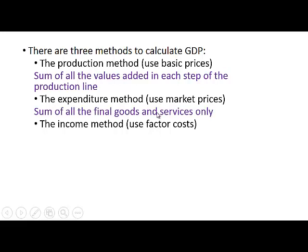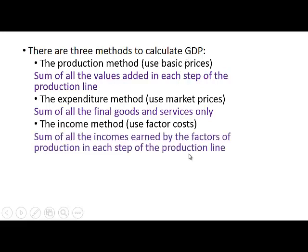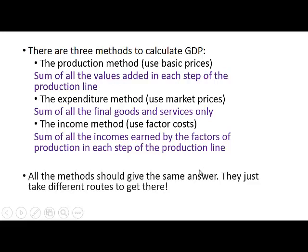For the expenditure method, we only take into account the value of final goods and services — we add all of that together to get GDP. The income method looks at all the incomes earned by the factors of production in each step of the production line and adds them together. What is important is that all three methods should give the same answer — they are just different ways to arrive at the same value of GDP.